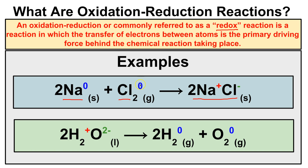Chlorine also has a neutral charge. Whenever you get sodium metal next to chlorine gas, what ends up happening is that sodium is going to want to transfer an electron to chlorine. When it does that, sodium becomes more positive on the product side — when you lose something negative, you become more positive. And because chlorine is gaining something negative, it's going to become more negative. Because there's a transfer of electrons taking place between these atoms, this is a redox reaction.